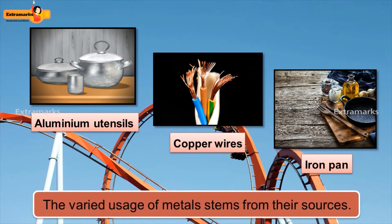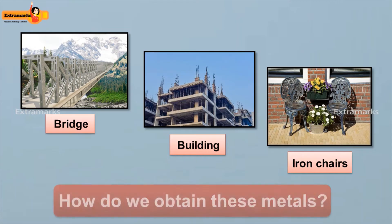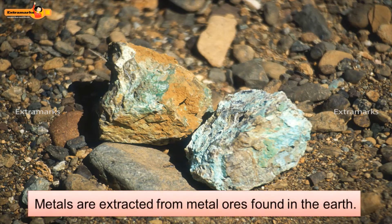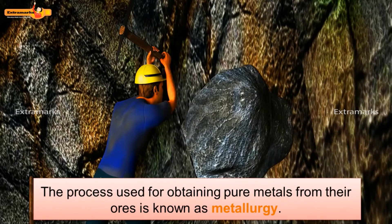The varied usage of metals stems from their sources. It thus becomes important to know how we obtain these metals. Metals are extracted from metal ores found in the earth. The process used for obtaining pure metals from their ores is known as metallurgy.